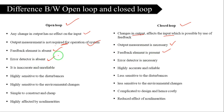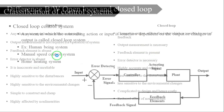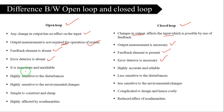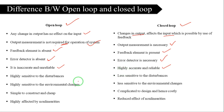Third point: in an open-loop system, the feedback element is absent, and there is no error detector because there is no comparison. In a closed-loop system, the feedback element is present, and there is an error detector which compares the two signals from output and input. Therefore, the open-loop system is inaccurate and unreliable, while the closed-loop system is accurate and reliable.